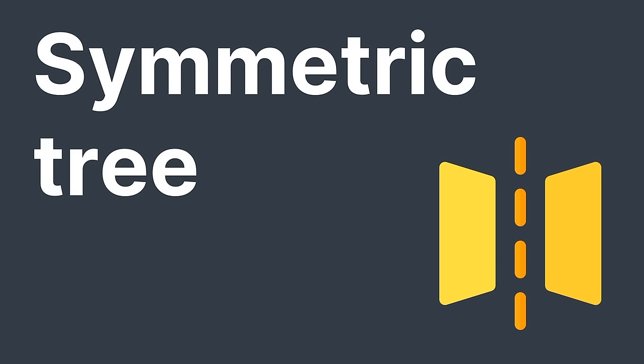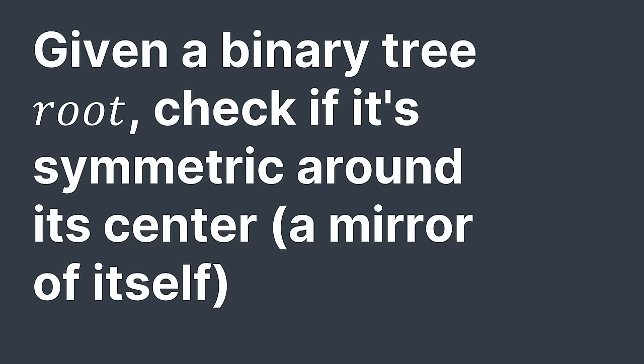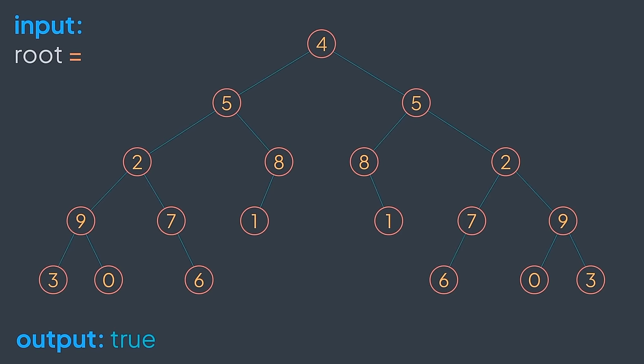Welcome back. In this lecture, we will solve the symmetric tree problem. We have a binary tree and we want to see if it's symmetric — in other words, if it's a mirror of itself. For example, this tree is symmetric because if we take its left part and reverse it, we get its right part, and vice versa. But this other tree is not symmetric — if we reverse its left part, we don't get the right part.